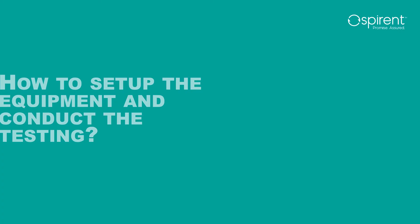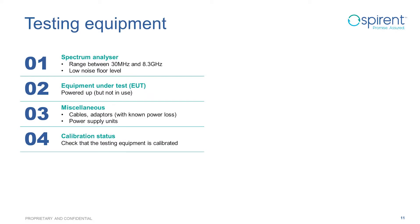Let's see what equipment is needed to perform these tests. The first item is a spectrum analyzer capable of detecting frequencies within the range of 30 MHz to 8.3 GHz, and it should have a low noise floor. The second item is the equipment under test, which should be powered and set to receive-only mode. Any other items, such as cable adapters and power supplies, should also be available and must be well specified and under a valid calibration status.